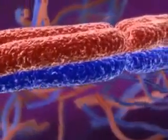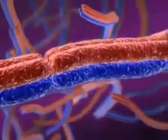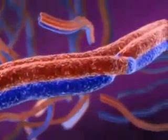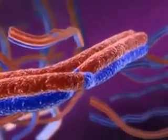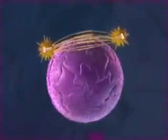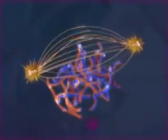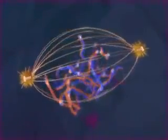In meiosis, homologous chromosomes stick together in pairs. The close association of homologous chromosomes allows segments of non-sister chromatids to trade places. This recombination of maternal and paternal genetic material is a key feature of meiosis.